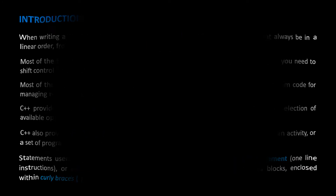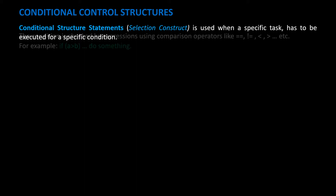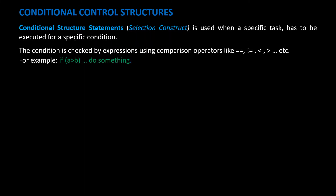Let's learn the different conditional control structures. Conditional structure statements, or the selection construct, is used when a specific task has to be executed for a specific condition. The condition is checked by expressions using comparison operators like the equality operator, not equal to, less than, greater than, etc. For example, if a is greater than b, do something.